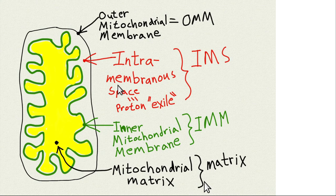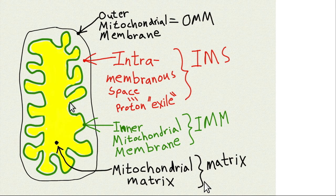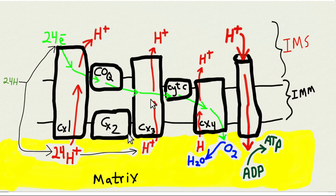Mitochondria are thought to have been taken into prokaryotic cells in the beginnings of life on Earth. The mitochondria provides the cell with energy. It has an outer mitochondrial membrane (OMM), an inner mitochondrial membrane (IMM), and a space between them called the intermembranous space (IMS). The center is called the mitochondrial matrix, where the Krebs cycle occurs. Electron transport happens along the inner mitochondrial membrane, and protons are pumped into the intermembranous space. Electrons are transported toward oxygen, which is the ultimate electron acceptor due to its high electronegativity.